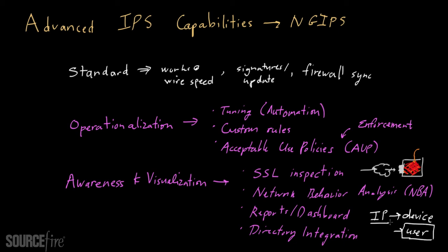A typical IPS device or firewall might tell you a lot about an IP address, but it may not give you enough to translate that to an actual user — which is where you really need more forward-thinking work. With directory integration, you can take network traffic, flow data, and IPS alerts, and tie them back to a physical user against whom you can then put policy into effect.